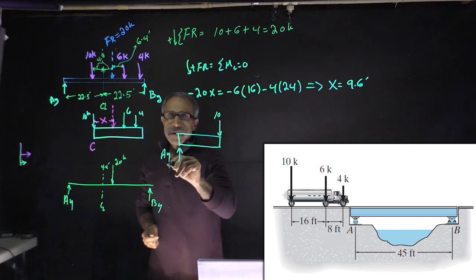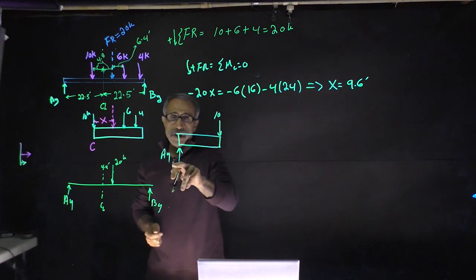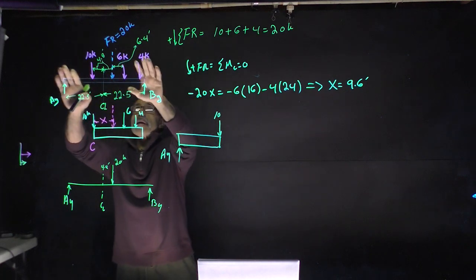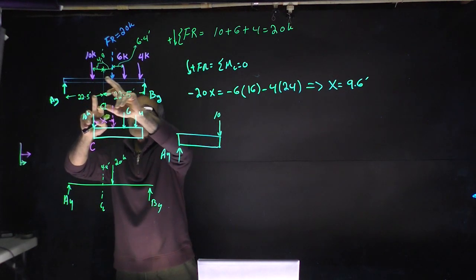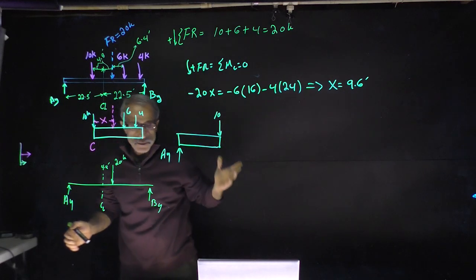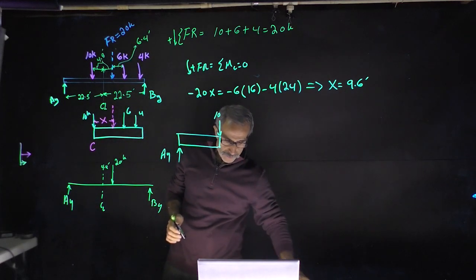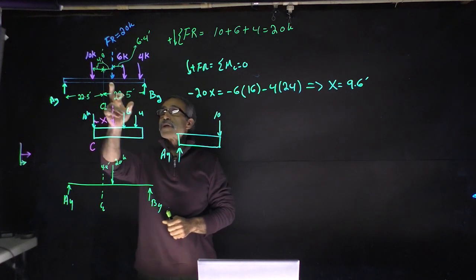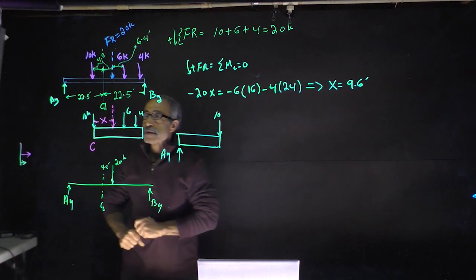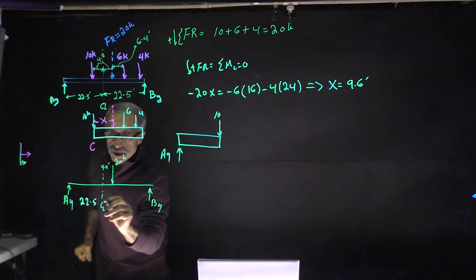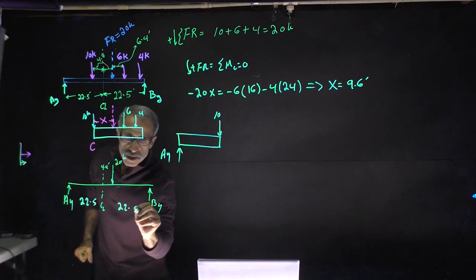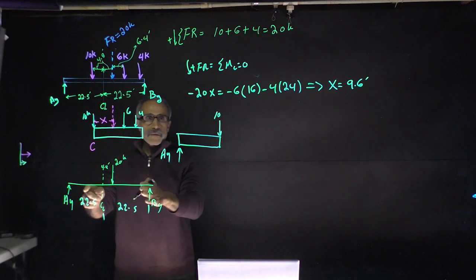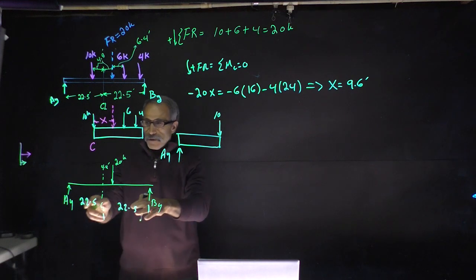With this positioning, the maximum moment occurs under the 10-kip axle. Set up the free body diagram: I have reaction Ay on the left and By on the right. I can use the resultant force of 20 kips placed 4.8 feet from the beam centerline. The beam span is 45 feet, so each half is 22.5 feet. The resultant is at 22.5 minus 4.8 feet from the left support.